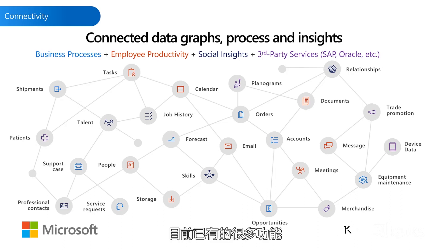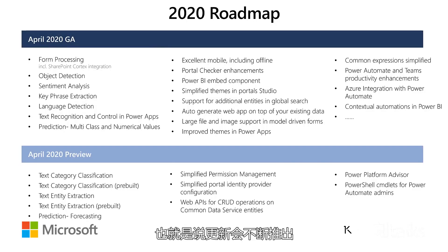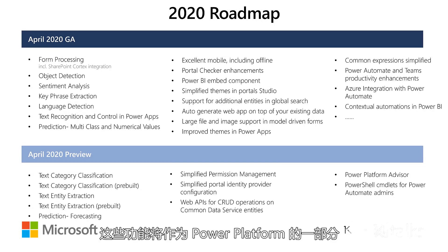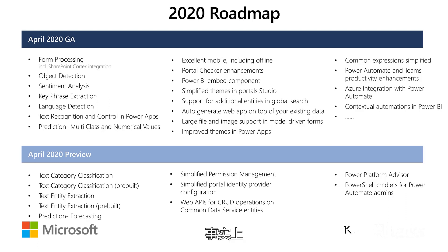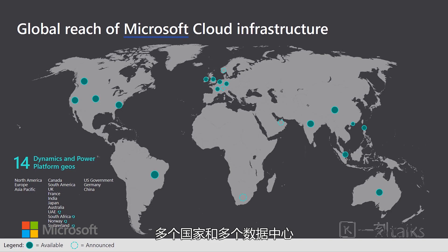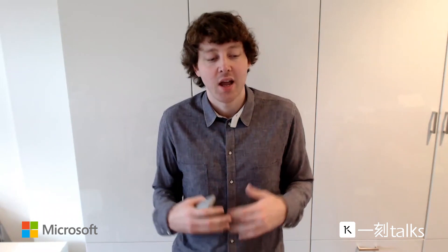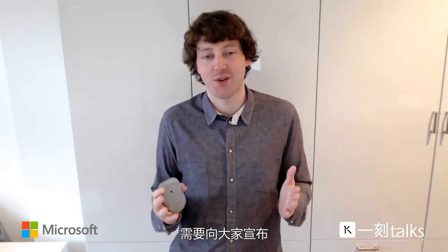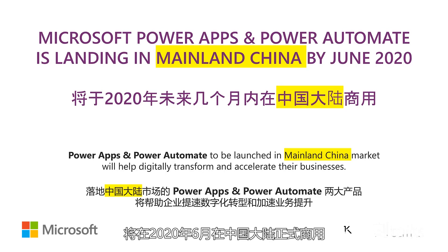We've talked a lot about what Power Platform already has today. But an important piece is how rapidly there's innovation on top of it. It's a fully managed cloud, which means there are always new updates coming. We're shipping hundreds of features and improvements to the Power Platform every six months. The Microsoft Cloud is available across the globe in a very large number of regions for both Dynamics and Power Platform in many different countries and data centers. And one of the important pieces is that we're very excited to announce that Microsoft Power Apps and Power Automate is landing in mainland China by June 2020.